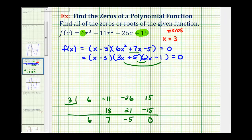And therefore, the remaining two zeros must be when 3x + 5 equals zero. So we'd subtract 5, divide by 3. We have x equals negative 5/3. And also when 2x - 1 equals zero, add 1 to both sides, divide by 2. We have x equals 1/2.